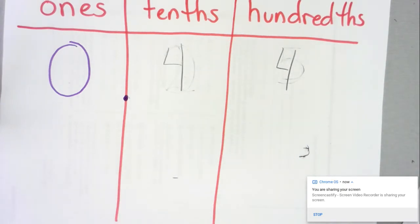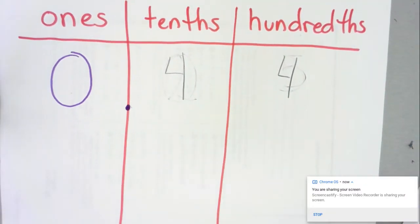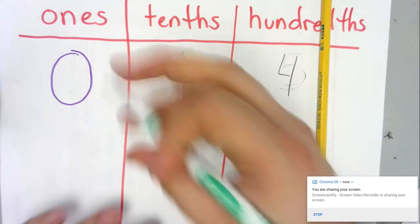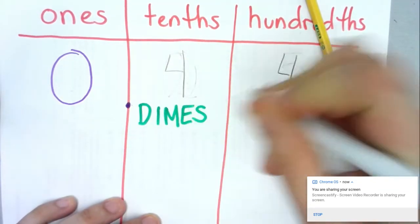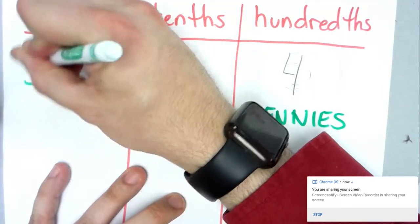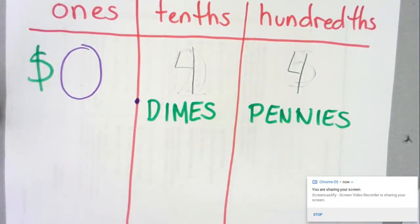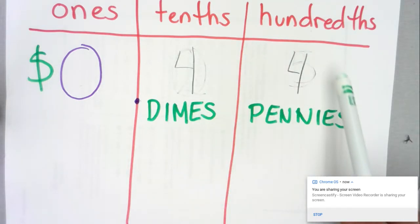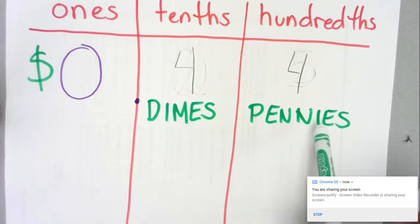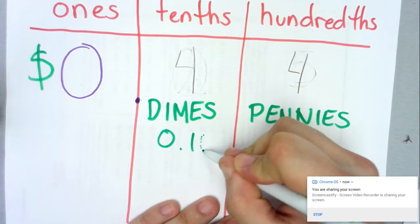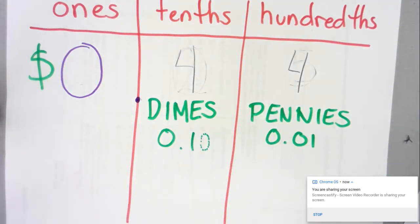One way I like to think about decimals — since they're pretty new for a lot of us — is to imagine it in terms of money. If I have 0.44, forty-four hundredths, I like to think of tenths as representing dimes and hundredths as representing pennies. If I'm trying to make 44 cents using only dimes and pennies, I can either make that using four dimes — four groups of ten cents — and then four more pennies, or I can just make 44 pennies. That's counting by 0.01 — by hundredths — versus counting by tenths.